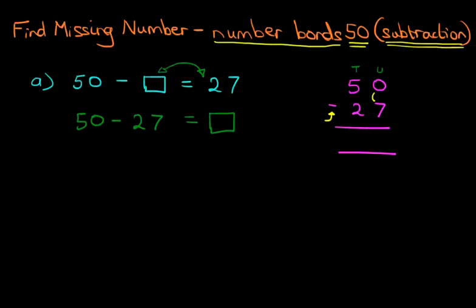Now we cannot do 0 minus 7 because 0 is smaller than 7. So therefore, we're going to take 1 from the tens over here. So let's cross out the 5. 5 minus 1 is 4. And the 1 we are taking from here, we're going to move to the units column. So the units column now reads 10 minus 7. 10 minus 7 is 3.